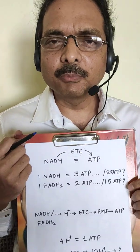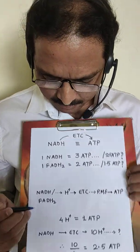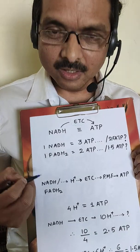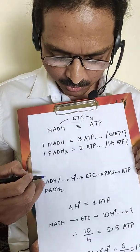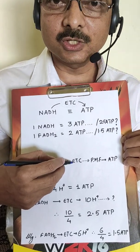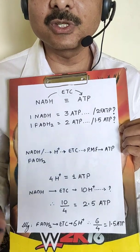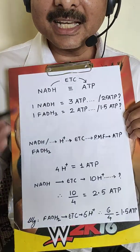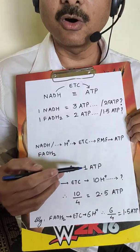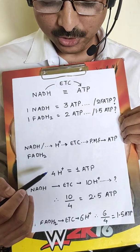Different theories have been proposed and many scientists have tried to explain this. The theory says that when NADH or FADH2 are formed during the course of metabolism, they donate their reducing equivalents in the form of H+ ions through the electron transport chain, generating a proton motive force, which is responsible for ATP formation. It has been observed that 4 H+ ion translocation is responsible for 1 ATP formation.